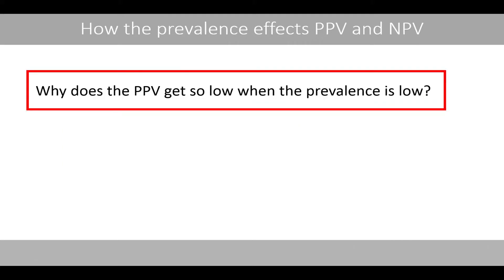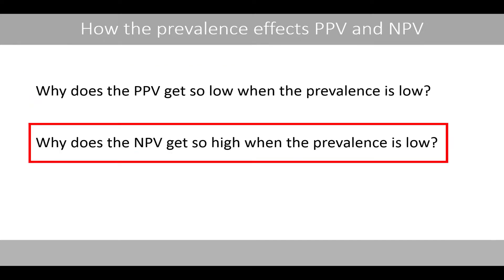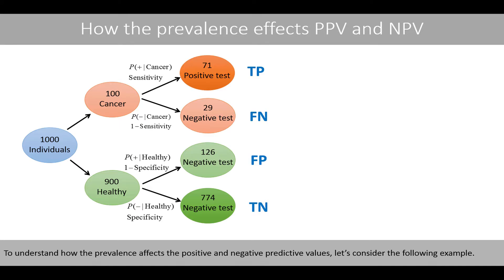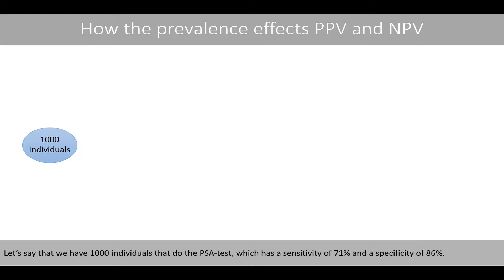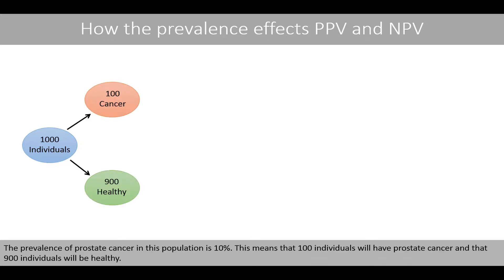So why does the positive predictive value get so low when the prevalence is low, and why does the negative predictive value get so high when the prevalence is low? To understand how prevalence affects PPV and NPV, consider the following example. Let's say we have 1000 individuals who take the PSA test, which has a sensitivity of 71% and a specificity of 86%. With a prevalence of prostate cancer of 10%, 100 individuals will have prostate cancer and 900 individuals will be healthy.